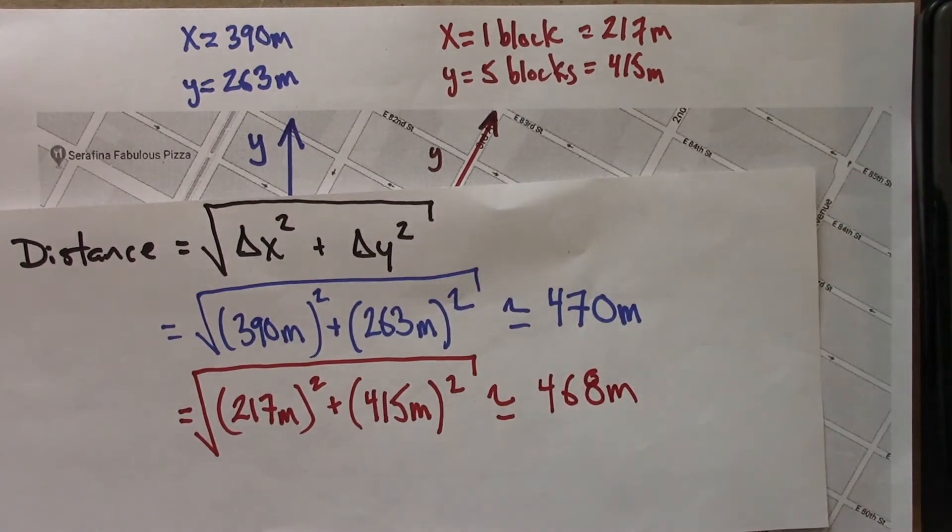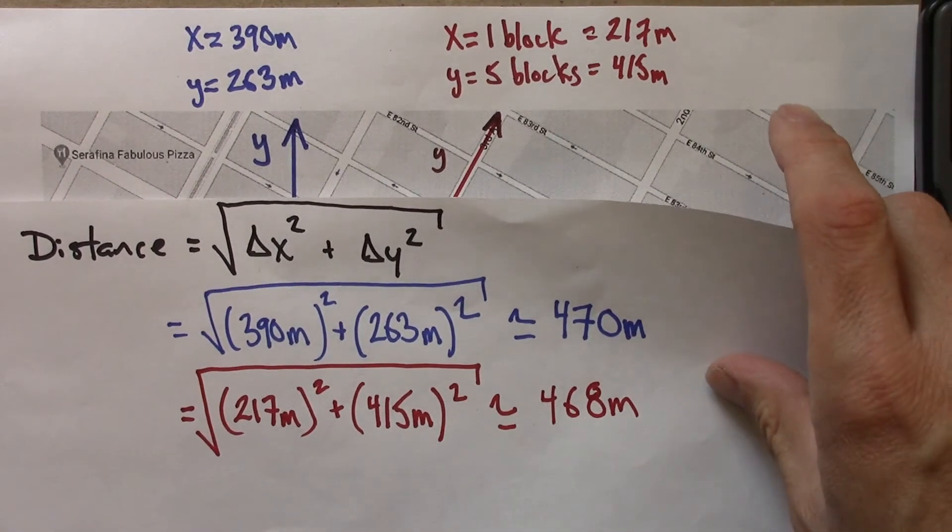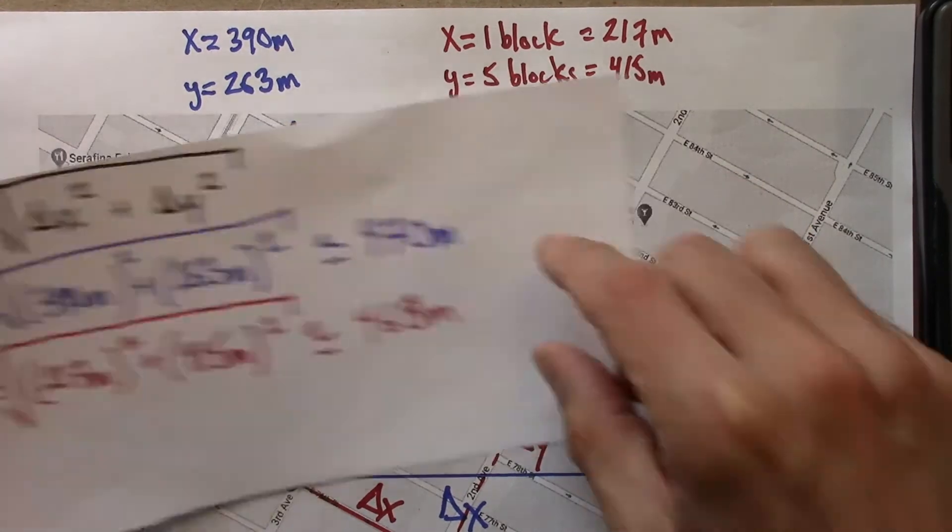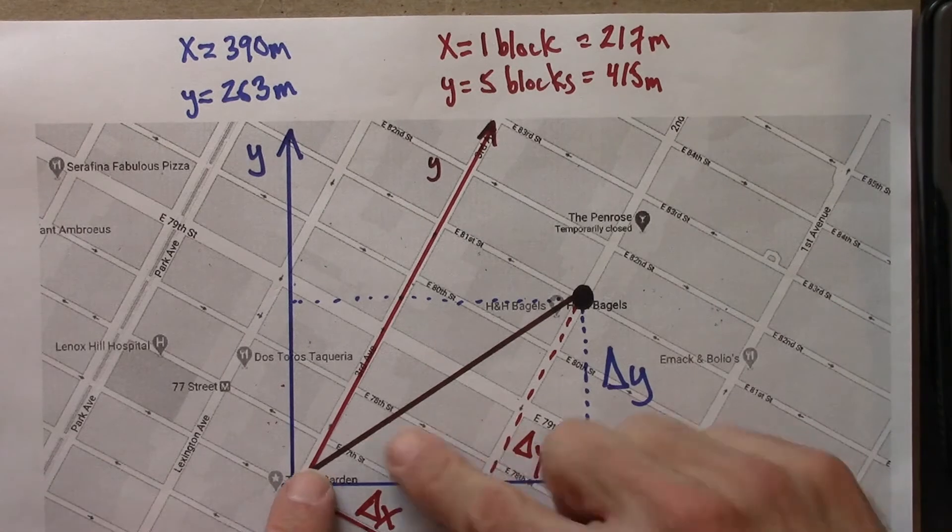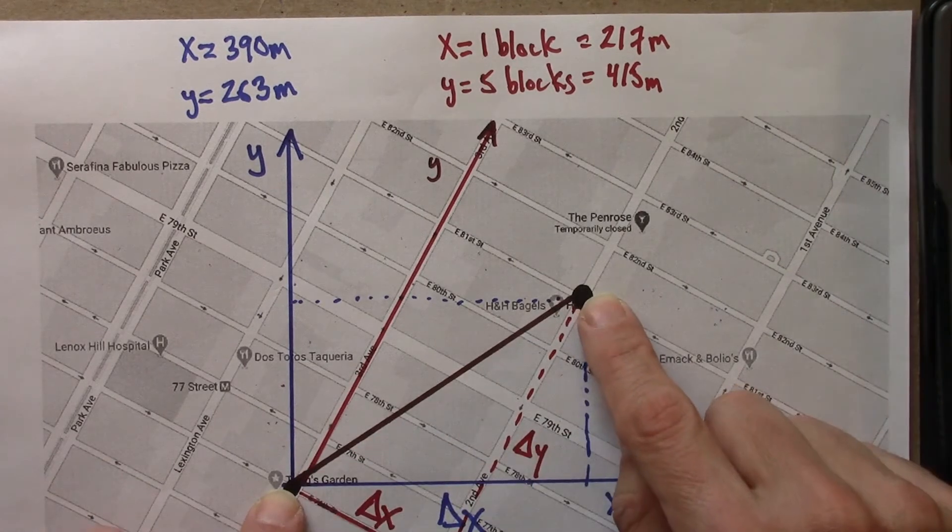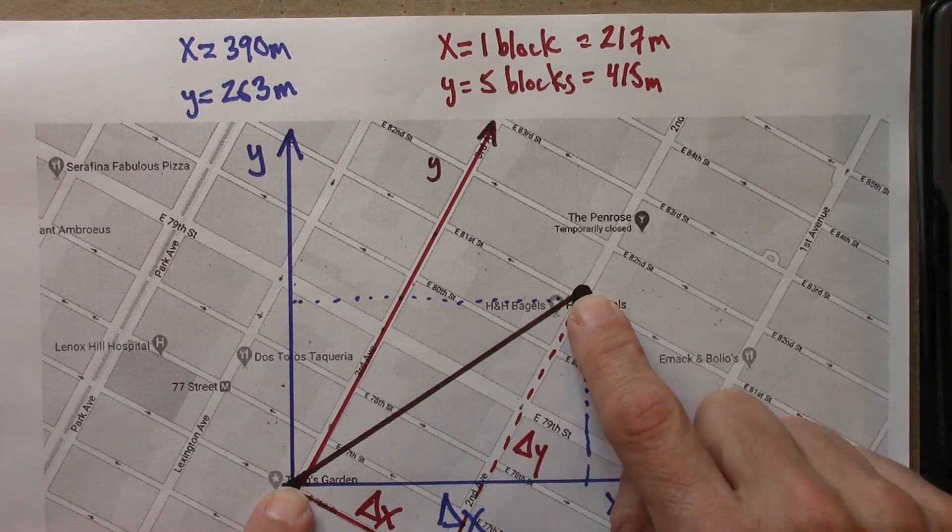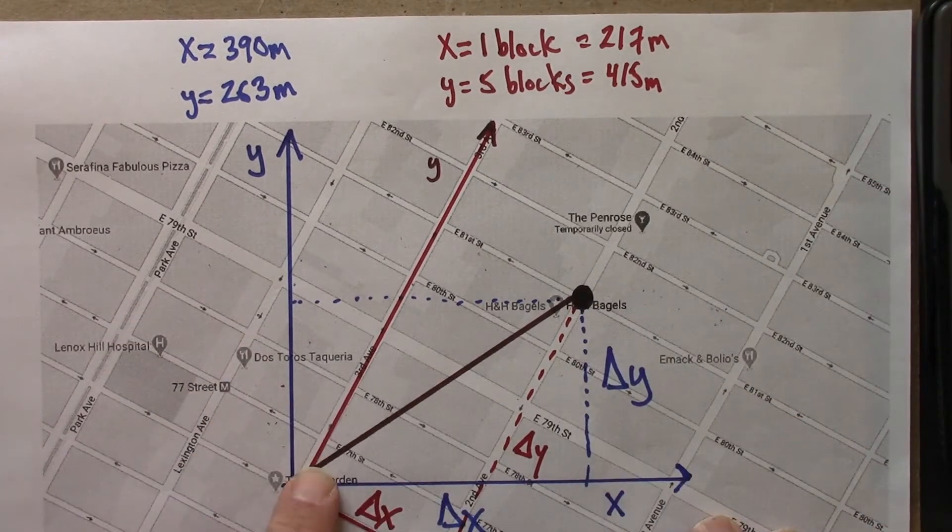Very close. Had I measured even more precisely on Google Maps, I would get these even closer together. But the main thing we can see from this drawing, that there's a type of distance between these two points that is constant, right? That doesn't depend on the coordinate system you use.